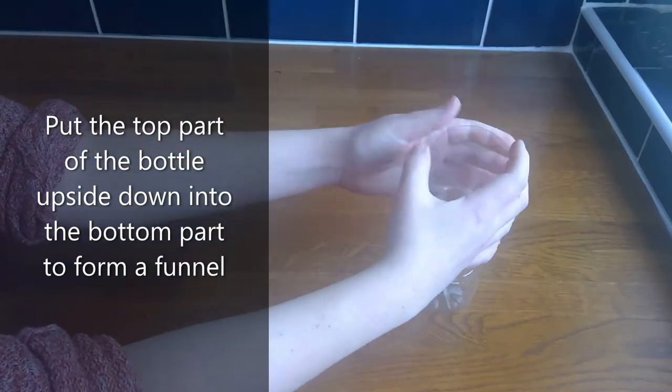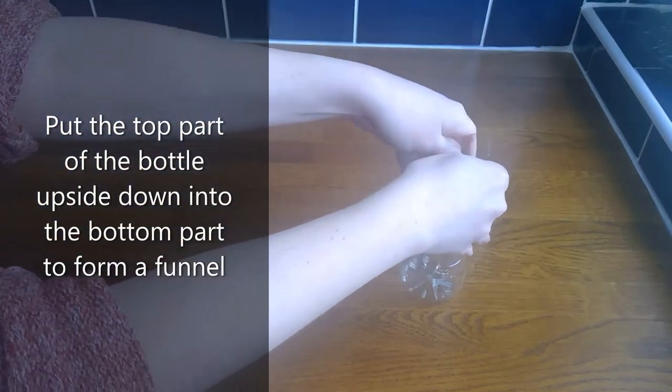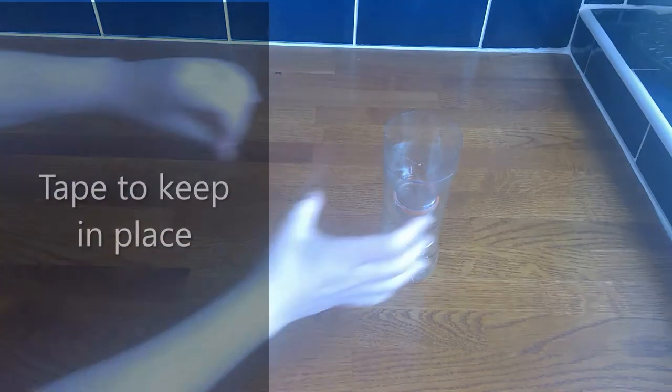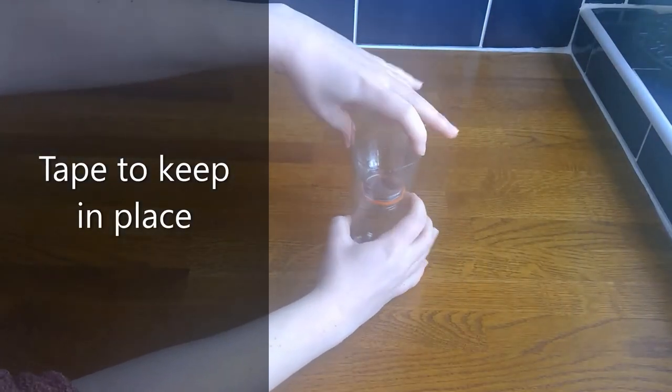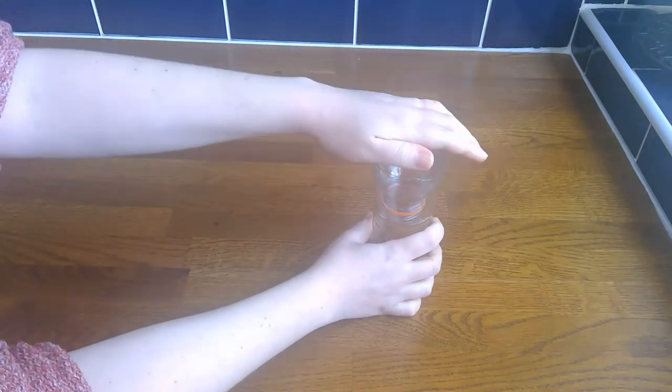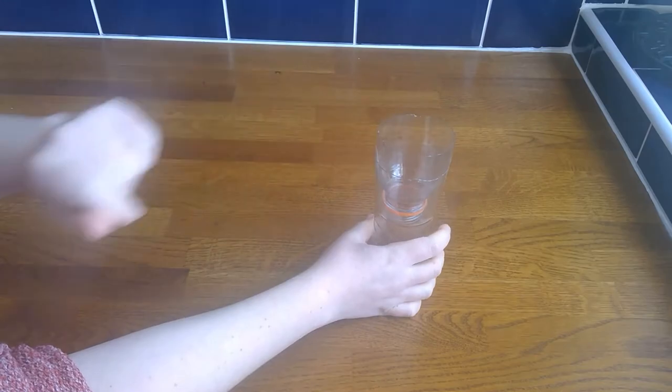Once that's done, you can take the top part of the bottle and put it upside down into the bottom part to form a sort of funnel. I'm going to take a couple of pieces of tape to keep that in place. If the top of the bottle is a little bit sharp, you can also put some tape around that, but mine seems okay.